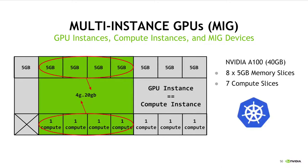In the context of Kubernetes, these are actually the only type of MIG devices we currently support. Due to the fact that all compute instances share access to the GPU memory of the wrapping GPU instance, subdividing into multiple compute instances does not fit well into the isolation guarantees one normally expects from the Kubernetes resource model. We may expand on this support in the future as things like pod-level resources start to take shape, but for now this is what we have.